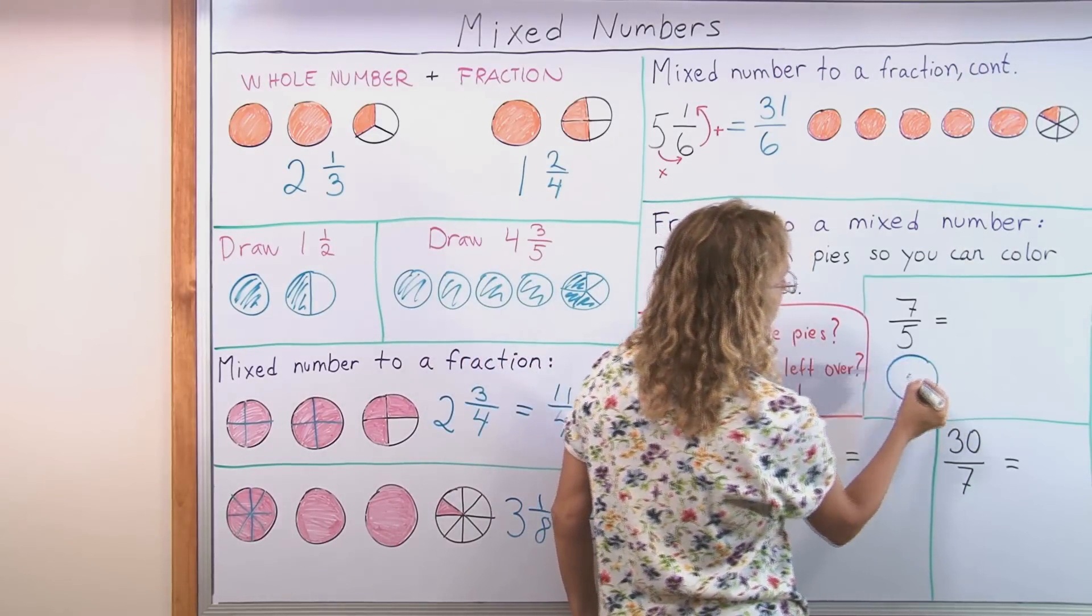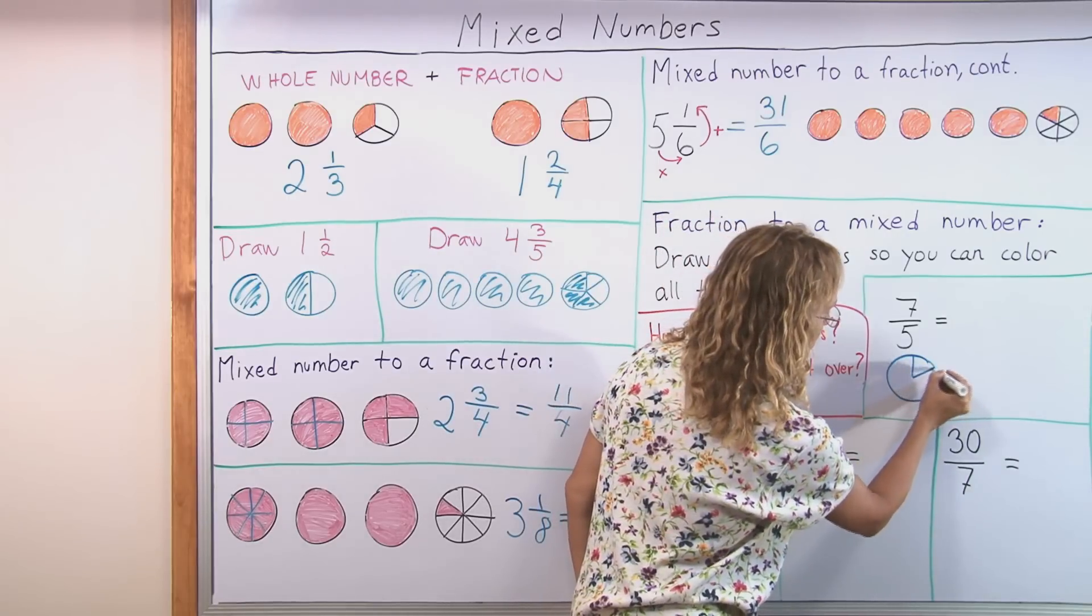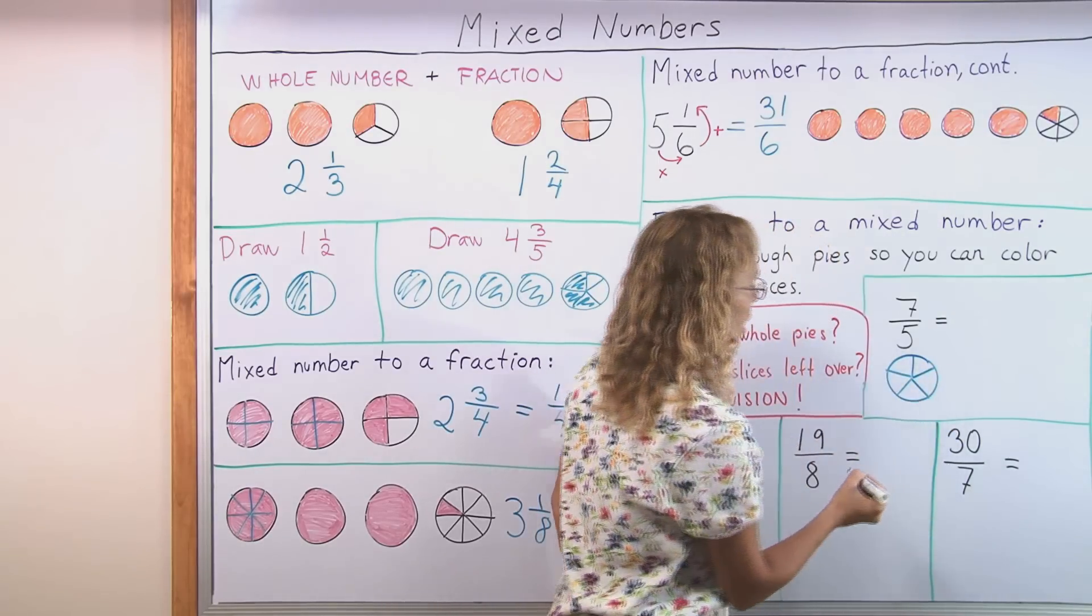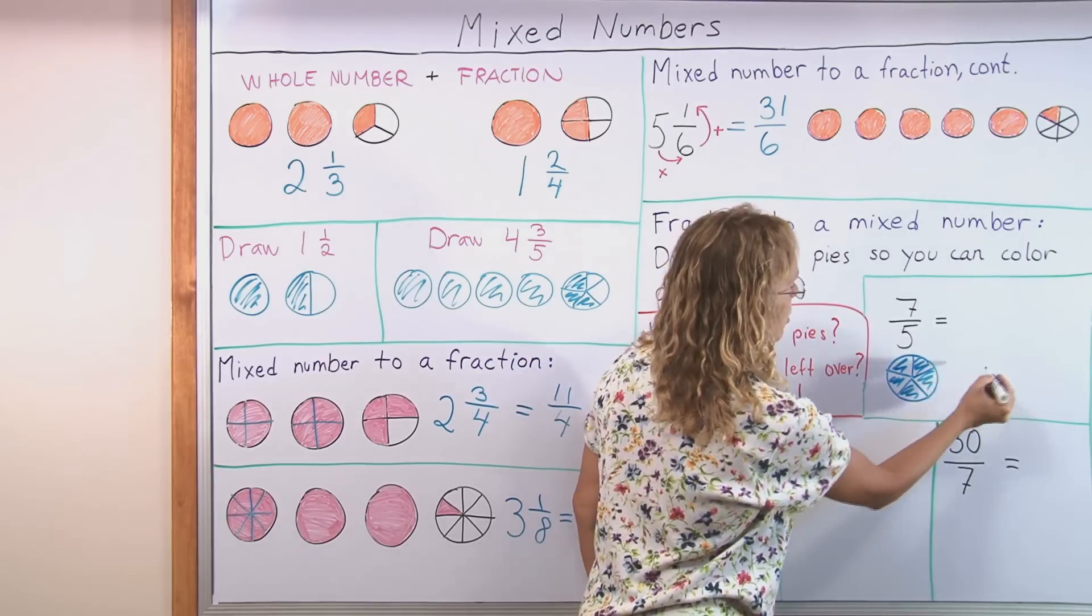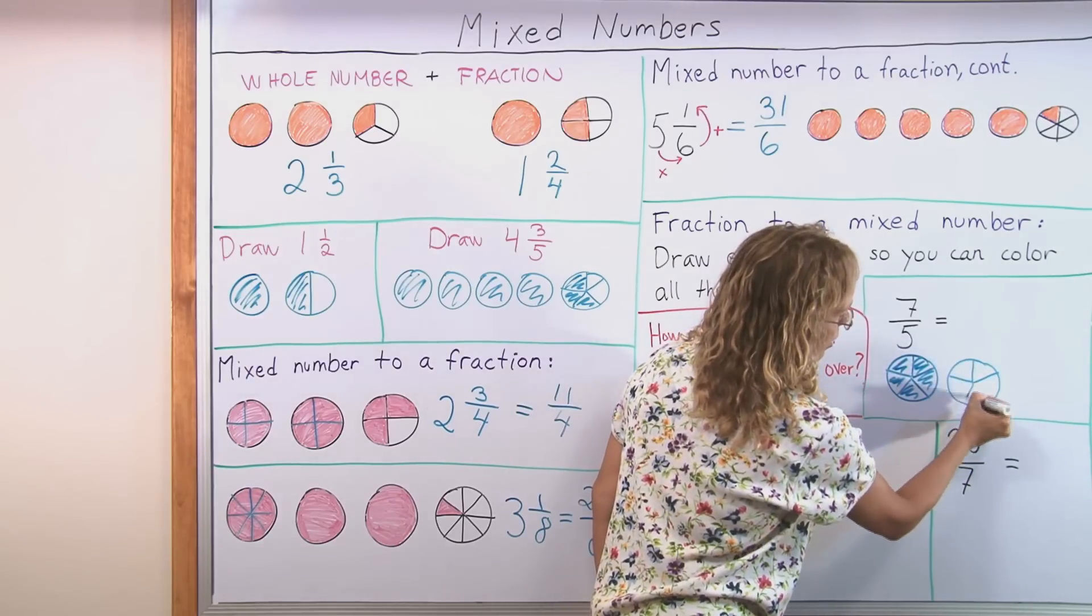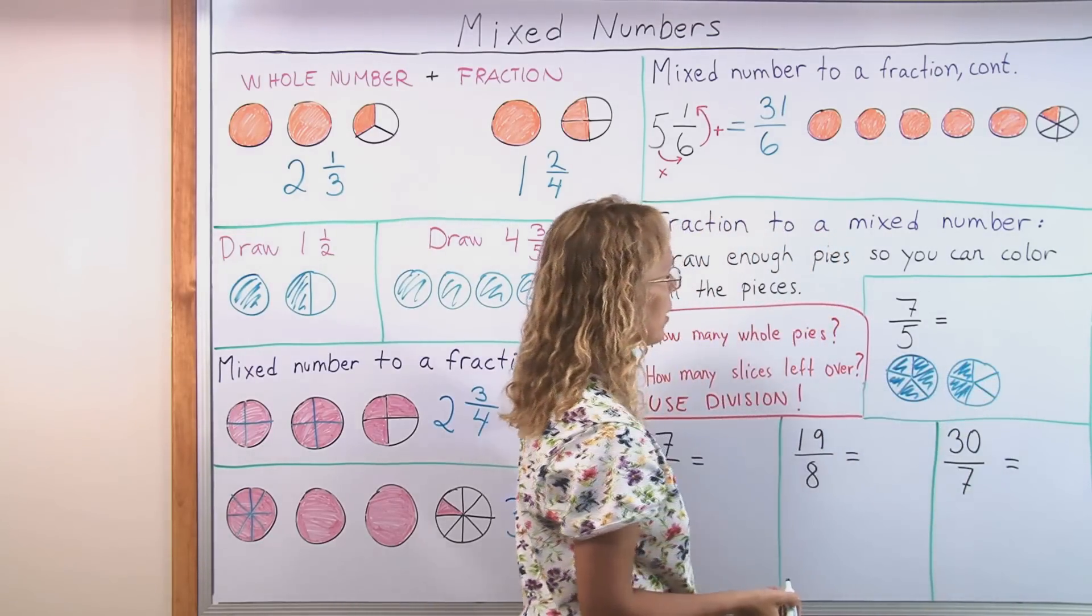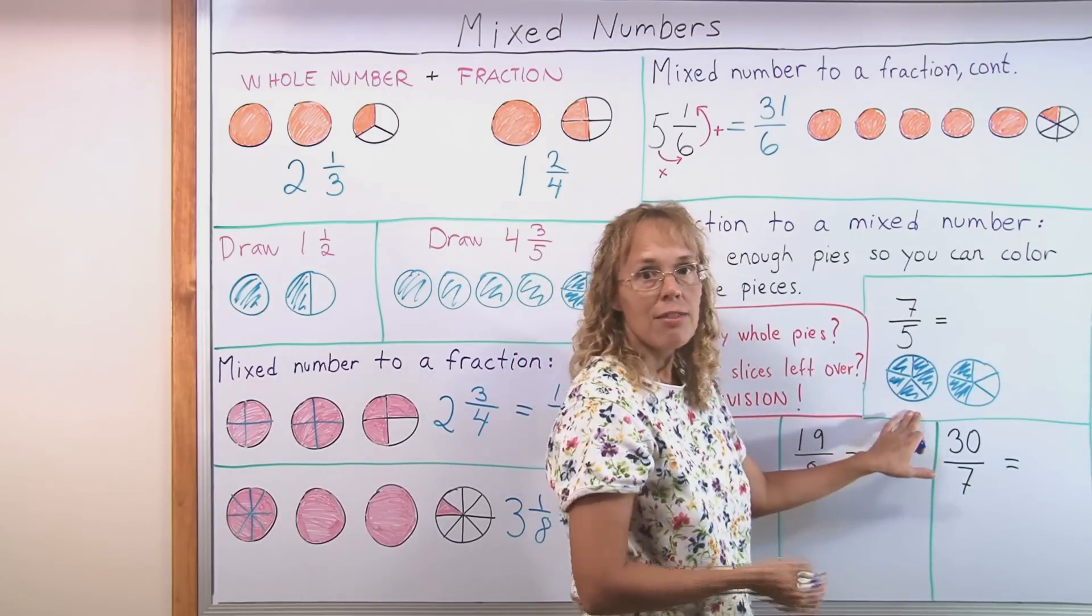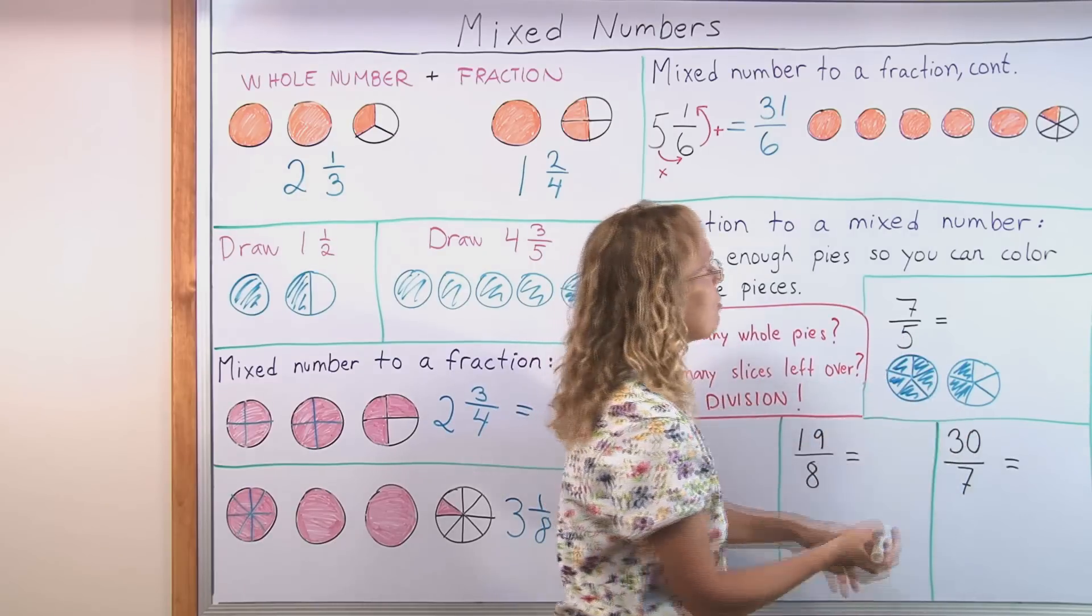If I draw a pie here, I need to color fifths in it. So I need to divide it into five parts. In this pie I can color five fifths. But that's not enough. So I need to draw another pie and divide that one into fifths and then color two more slices from here. There. Now I have colored seven fifths. And I can see it's a mixed number. It would be one and two fifths.